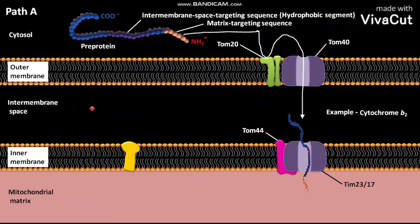From the intermembrane space, the pre-protein is incompletely translocated through the inner membrane with the help of transmembrane protein TIM44 and the TIM23 translocation channel. The pre-protein is incompletely translocated because the intermembrane space targeting sequence blocks its complete translocation. The inner membrane of mitochondrion also has a protein called matrix protease.